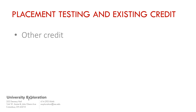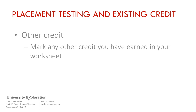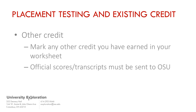If you have already received advanced placement exam credit, or have anticipated credit but have not received scores yet, please mark this on your worksheet. In order to receive credit for an AP exam, you must have an official score sent to Ohio State from the College Board. You can find additional instructions about submitting score reports on the Testing Center's website.